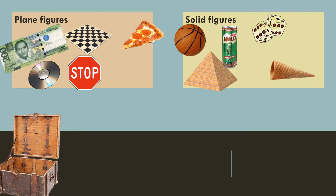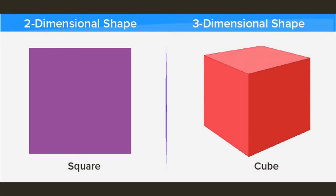Okay, so these are the differences between the two. Plane figures are two-dimensional shapes because they only have length and width — just length and width.